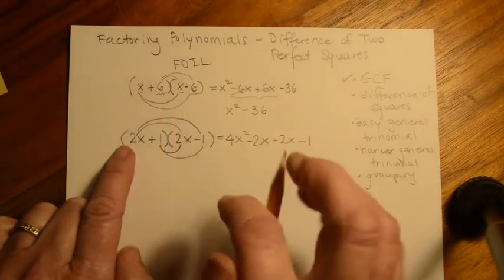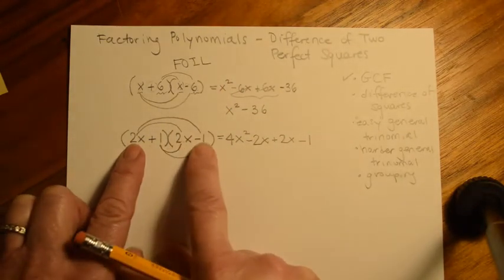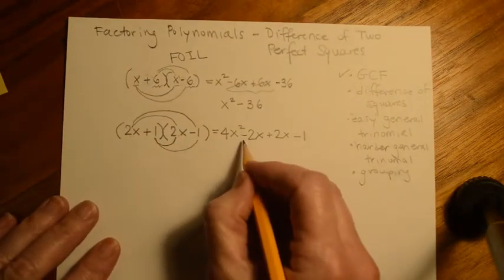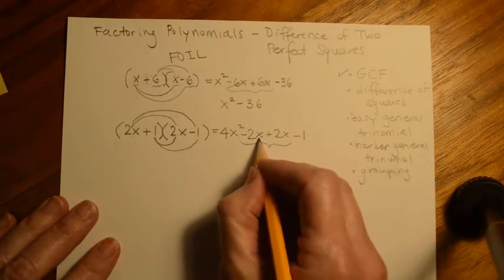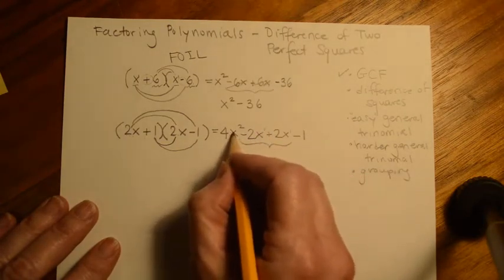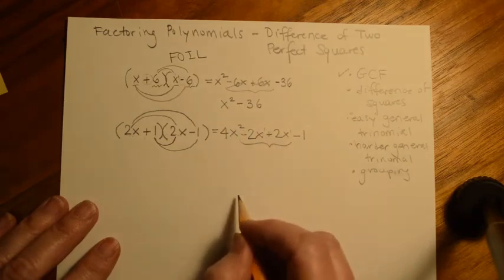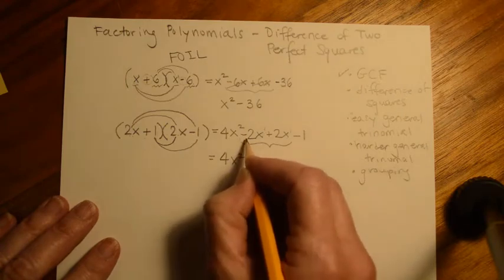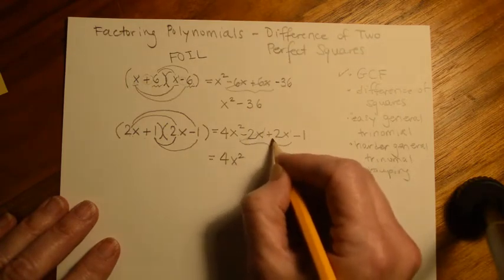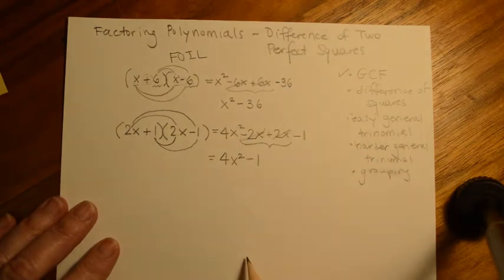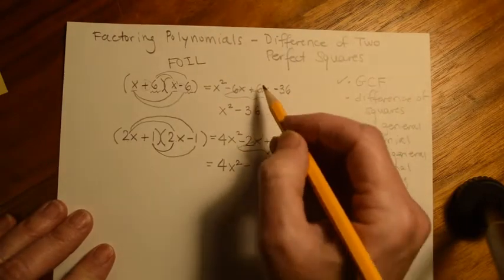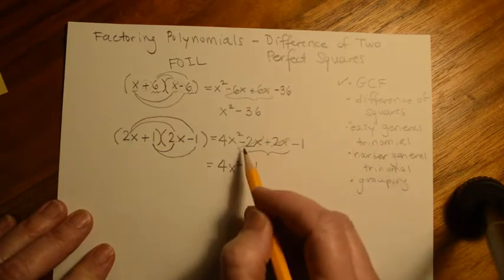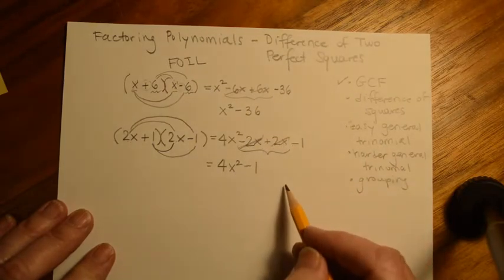Using FOIL — first, outer, inner, last. We combine like terms: minus 2x plus 2x cancel out, and we're left with 4x squared minus 1. Notice how that happened in the first example too — minus 6x plus 6x canceled, so all that was left were the two end terms. Same thing here: minus 2x plus 2x cancel out.